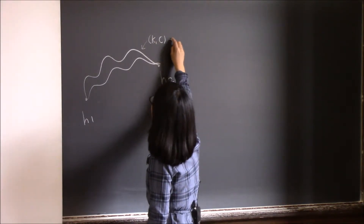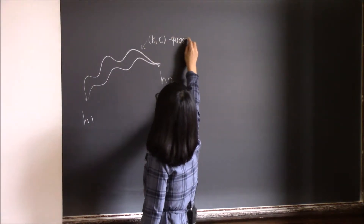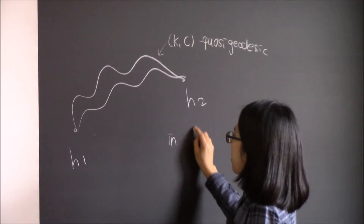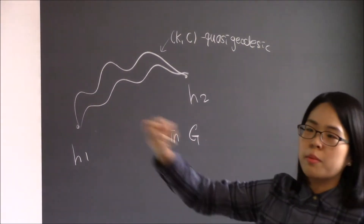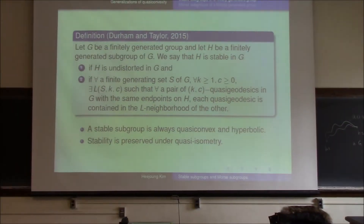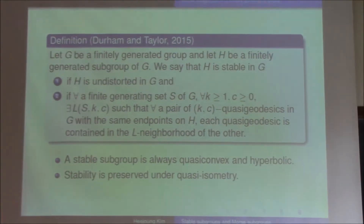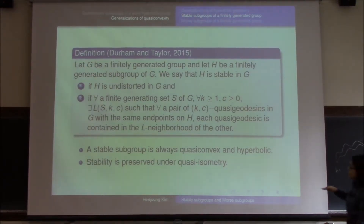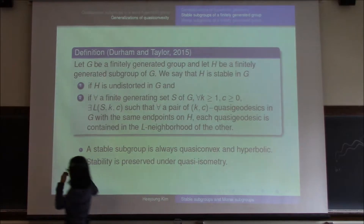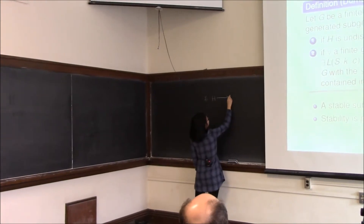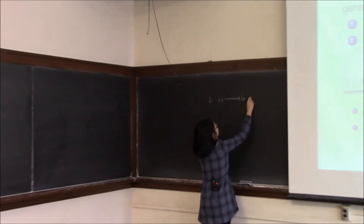The picture is: we have two points H1 and H2, which are elements in H, and we think about two K,C quasi-geodesics in G. Then there exists some constant L such that each quasi-geodesic is contained in the L-neighborhood of the other. By the definition, a stable subgroup is always quasi-convex and hyperbolic.